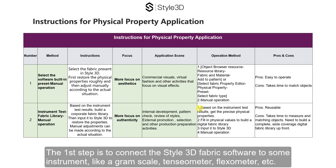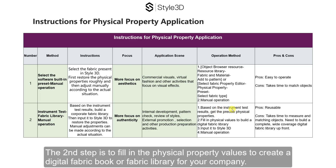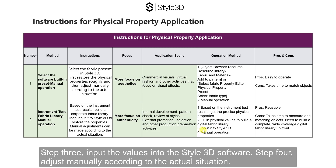The first step is to connect the Style 3D fabric software to some instruments like a gram scale, tensiometer, flexometer, etc. The second step is to fill in the physical property values to create a digital fabric book or fabric library for your company. Step 3: input the values into the Style 3D software. Step 4: adjust manually according to the actual situation.